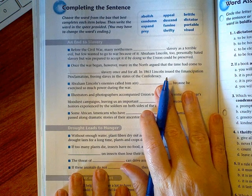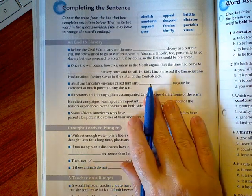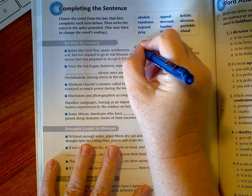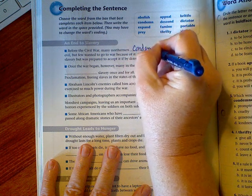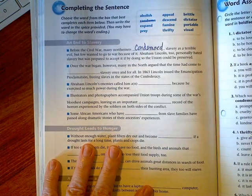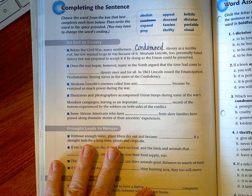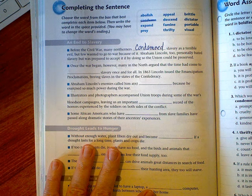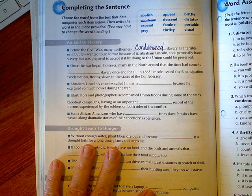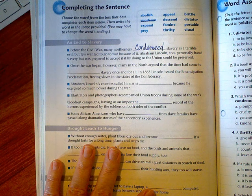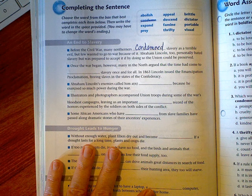Let's get started. An end to slavery: before the Civil War, many Northerners condemned slavery as a terrible evil, but few wanted to go to war because of it. Abraham Lincoln too personally hated slavery but was prepared to accept it if by doing so the Union could be preserved. Once the war began, however, many in the North argued that the time had come to...